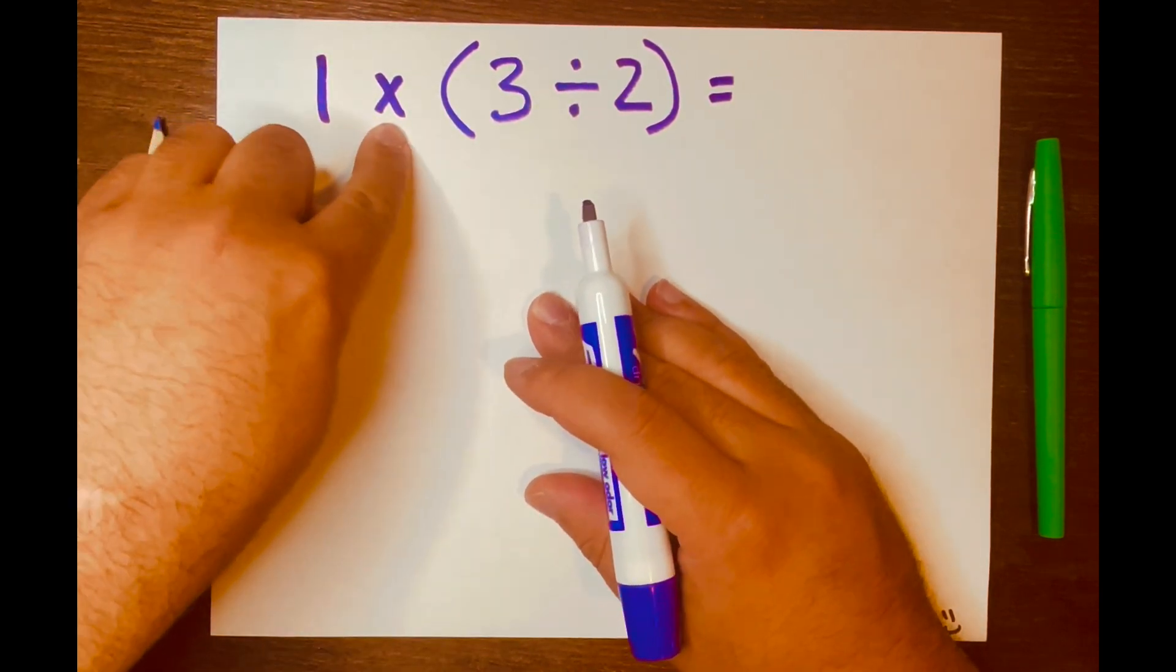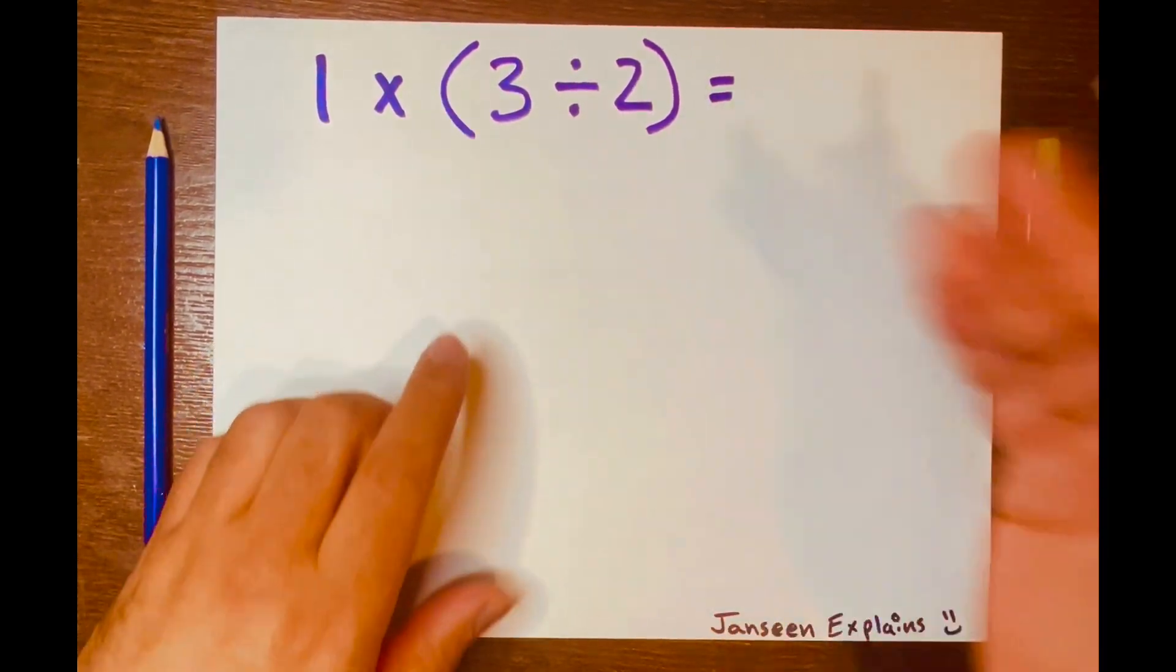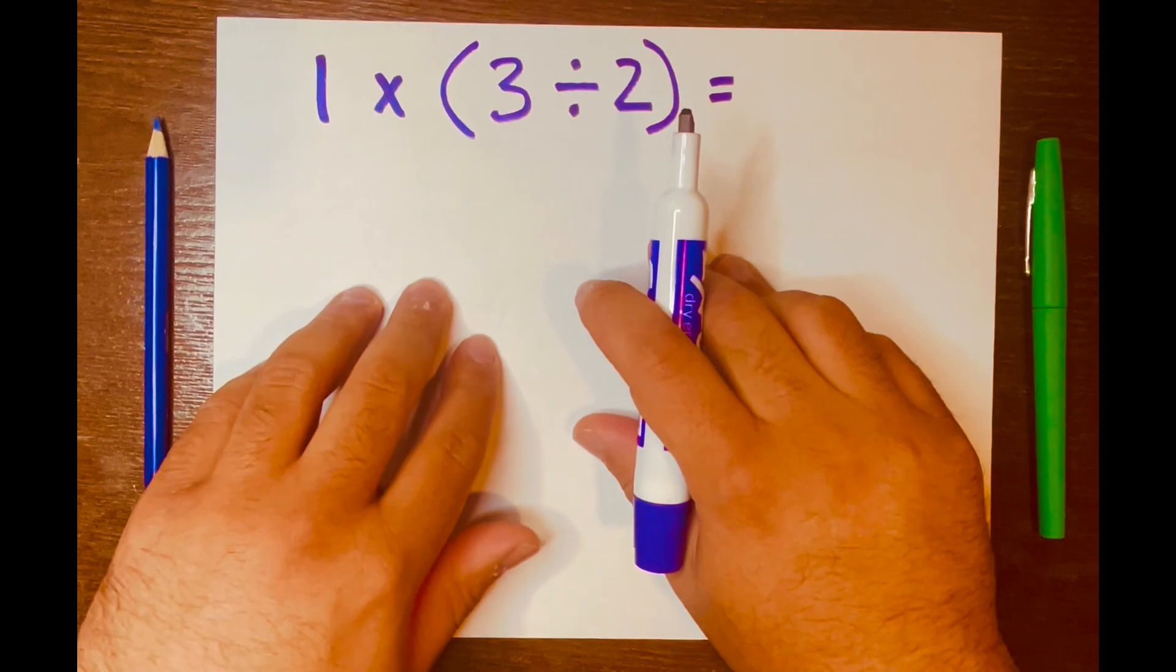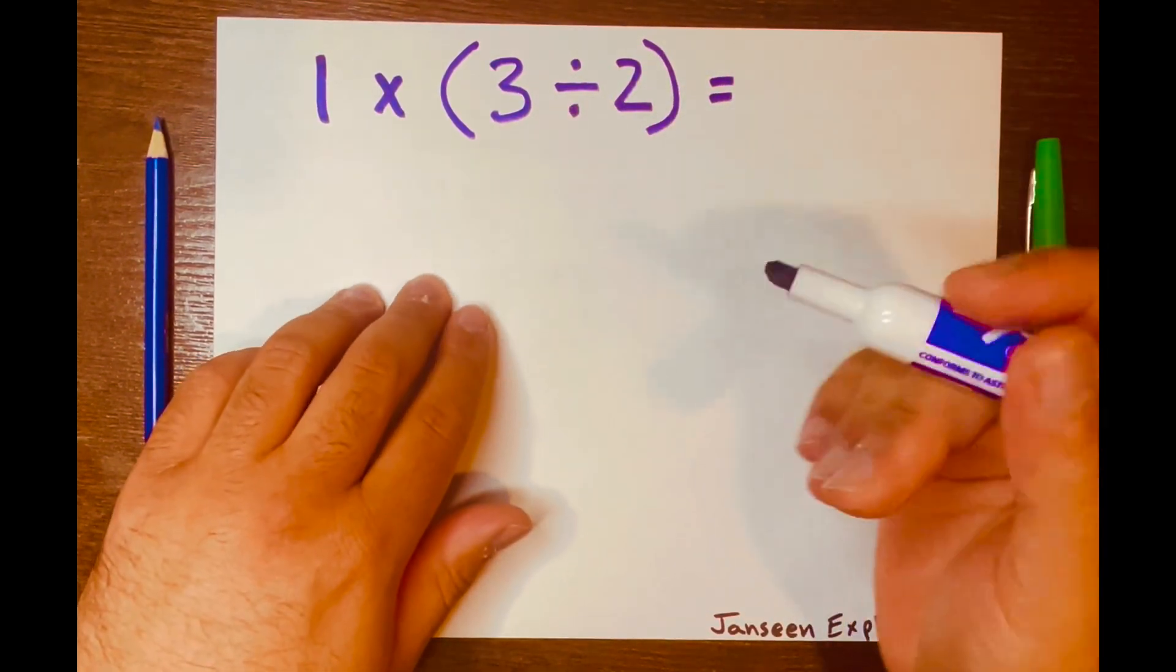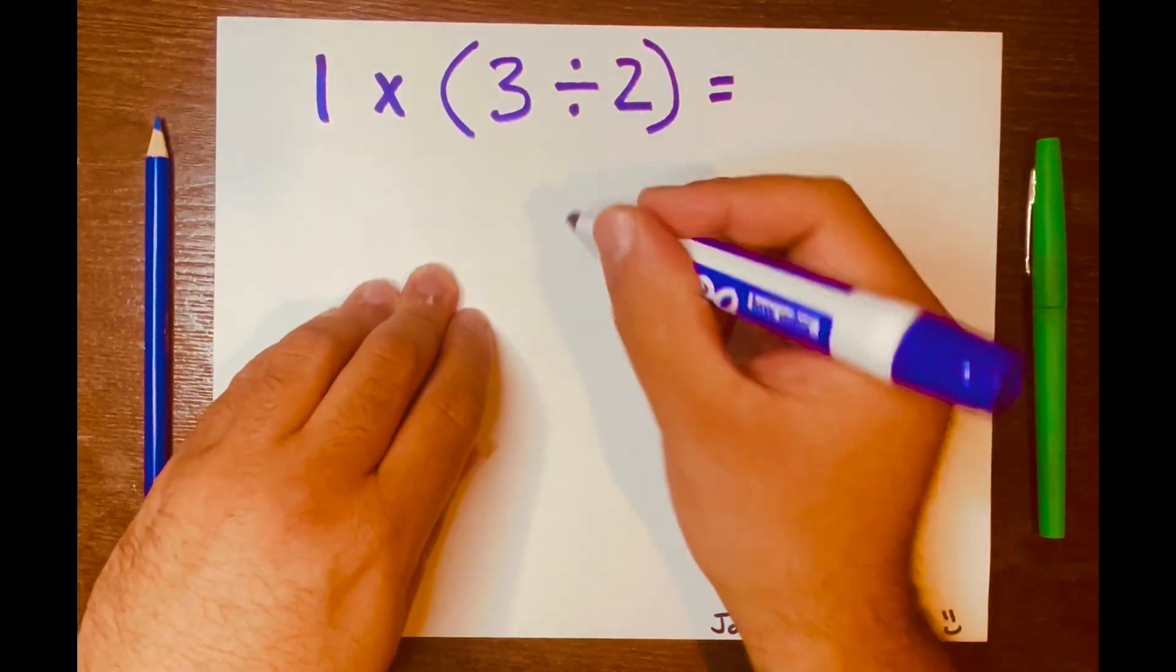We have 1 × (3 ÷ 2) and I'm thinking of PEMDAS to start solving this problem. So according to PEMDAS, you start within the parentheses. So we do 3 ÷ 2 first.